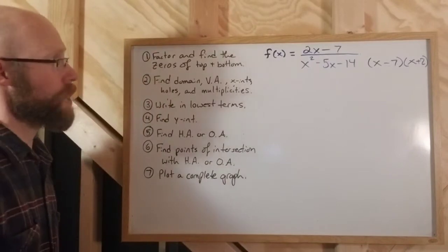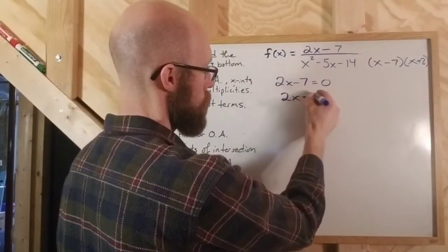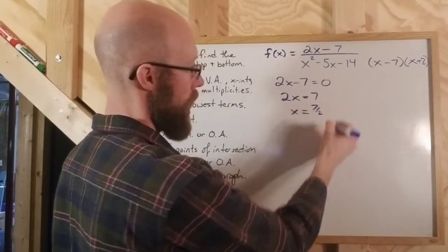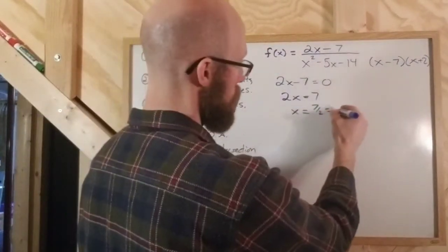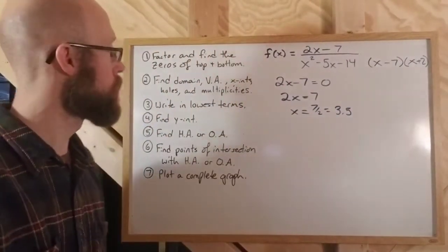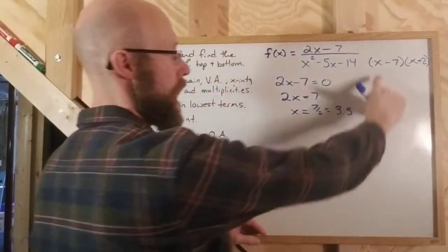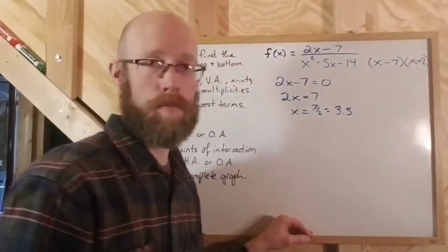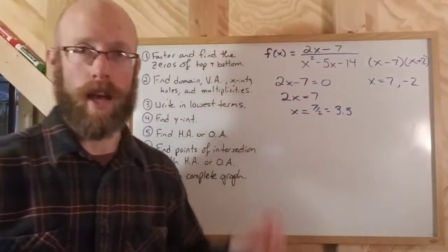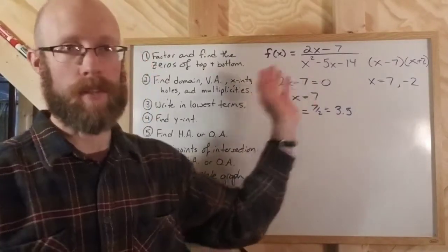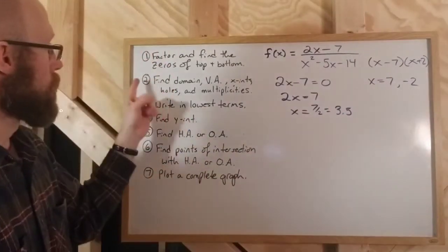Now I've got to find the zeros. To find the zero of the numerator, I take 2x minus 7, set it equal to zero, and solve for x. So 2x equals 7, divide by 2, x equals 7 halves, which is 3.5. I'll put that in decimal form so I can more easily identify it on a graph. For the denominator, because x minus 7 and x plus 2 are the factors, the zeros are at x equals 7 and negative 2. So I've got three zeros total — two for the denominator, one for the numerator.